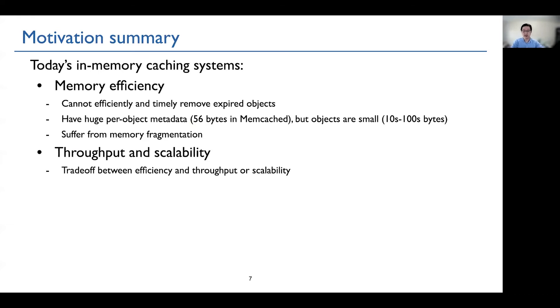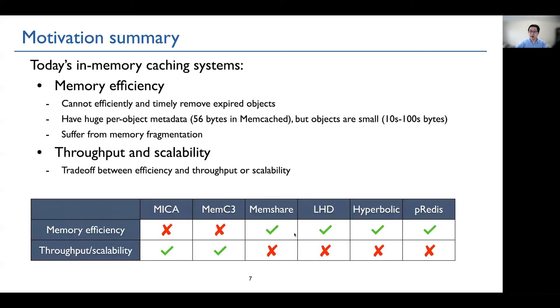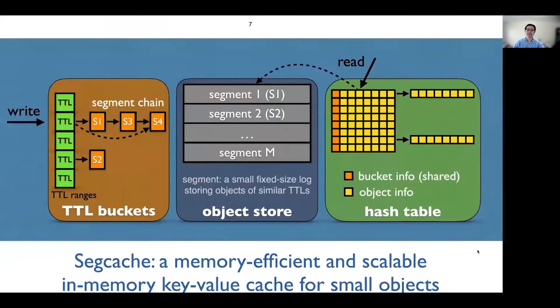In terms of throughput and scalability, we observe that existing systems make trade-offs between efficiency and throughput. And we summarize the state-of-the-art systems in this table. And we observe that they either improve memory efficiency, like these ones, or improve throughput and scalability, like these two.